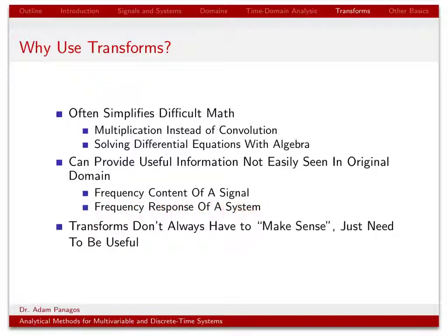The same applies to systems. If you're given the impulse response of a system, which is a time domain quantity, and asked how it impacts signals at a frequency of a kilohertz, that might not be obvious from the impulse response alone. However, if you transform the impulse response into the frequency domain to get the frequency response, it becomes very simple to know how the system impacts signals at any frequency.